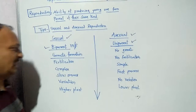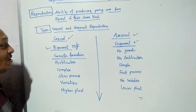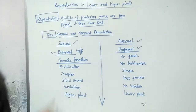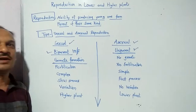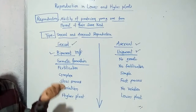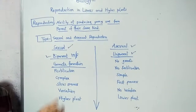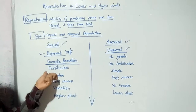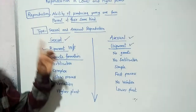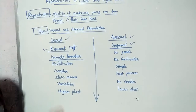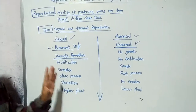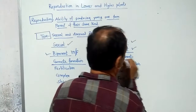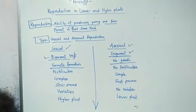The second difference is gamete formation. In 11th standard I already discussed gamete formation with you. A gamete is nothing but the product of reduction division — it occurs through meiosis. When gamete formation is present in any living organism, it confirms that that organism belongs to sexual reproduction. Whereas in asexual reproduction there is no formation of gametes.